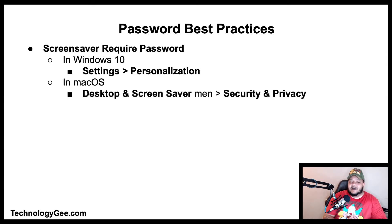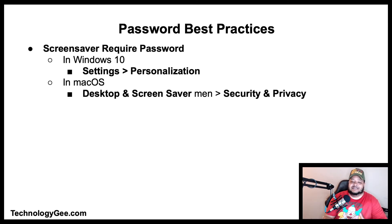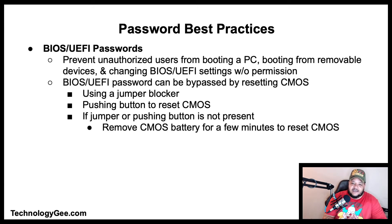To minimize unauthorized users from gaining access to a computer currently in use, the authorized user should be required to enable a screen saver password, requiring entry of the correct password to unlock the screen and regain access. To set up a screen saver password in Windows 10, go to Settings then Personalization. On Mac, go to Desktop and Screen Saver, then Security and Privacy.